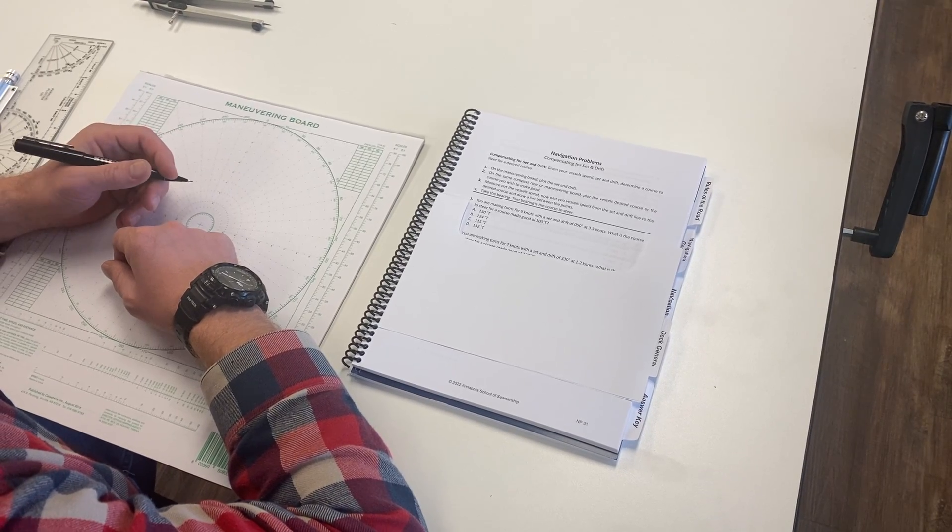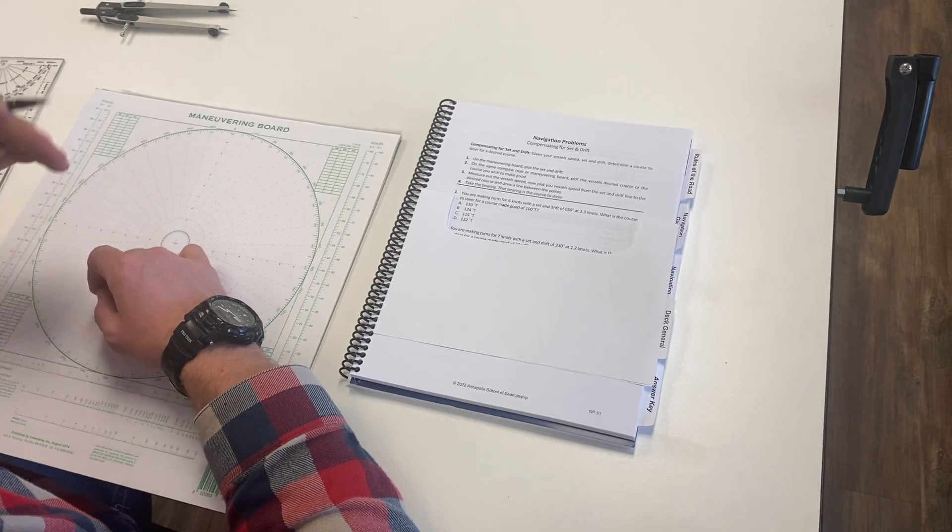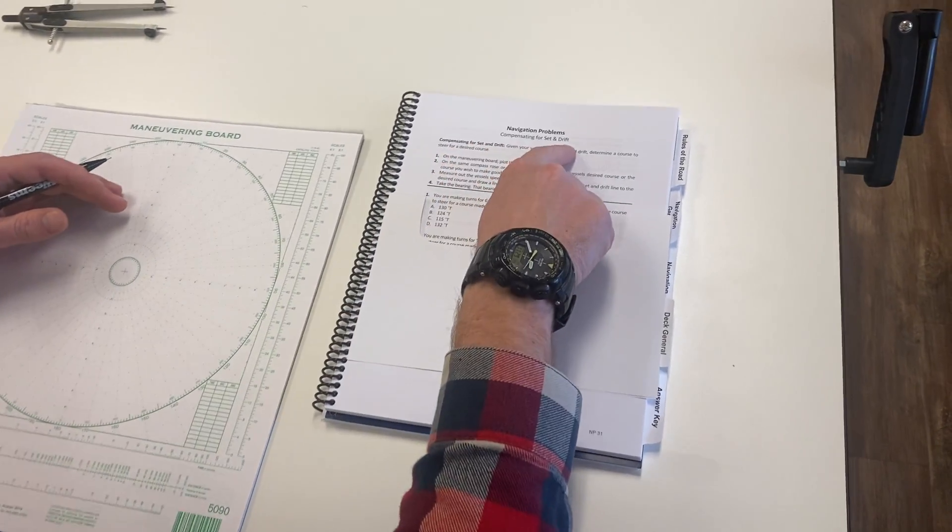Okay, here we are again back in our navigation problem section of our workbook. We just did determining our set and drift, and now we're going to be working on compensating for set and drift.